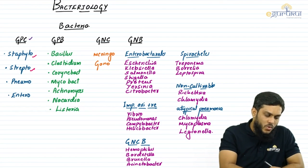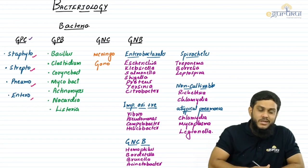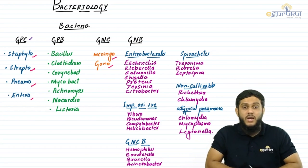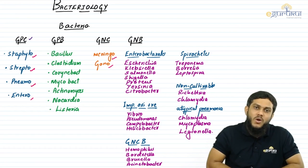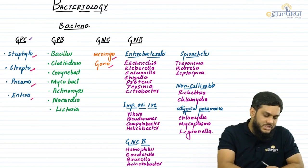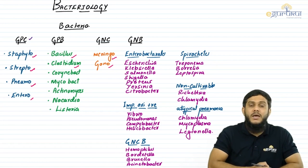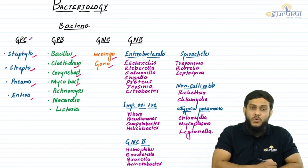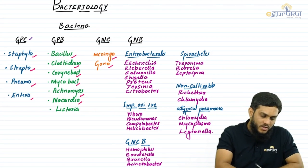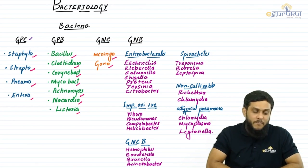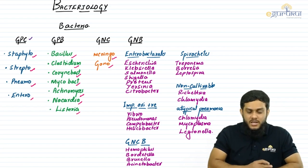We have four important gram positive cocci: staphylococcus, streptococcus, pneumococcus, and enterococcus. We have two important gram negative cocci: meningococcus and gonococcus. For bacilli, we have seven important gram positive bacilli: bacillus, clostridium, corynebacterium, mycobacterium, actinomyces, nocardia, and listeria.